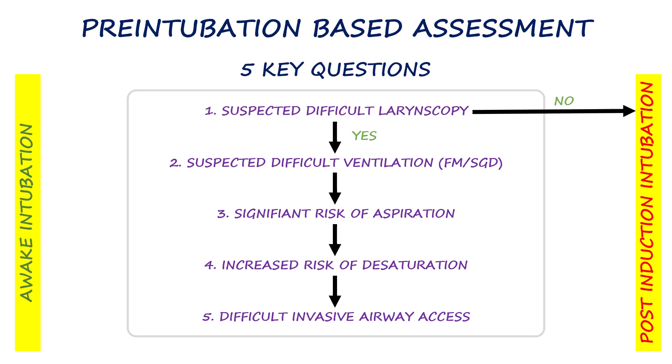Second, we assess the likelihood of difficult mask ventilation or supraglottic airway placement. These techniques act as safety measures for ventilation and oxygen delivery if intubation fails. If these backup measures are not feasible, the patient should remain awake and able to breathe on their own to avoid hypoxia. If mask ventilation and supraglottic airway use appear feasible, we may proceed with intubation even if laryngoscopy is predicted to be difficult, since oxygenation can still be maintained using these backup techniques. However, we still need to consider the remaining questions to ensure overall safety.